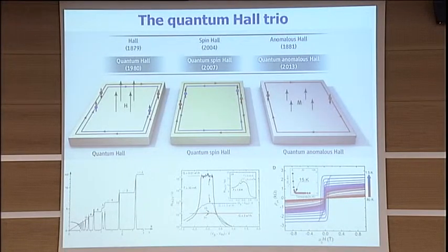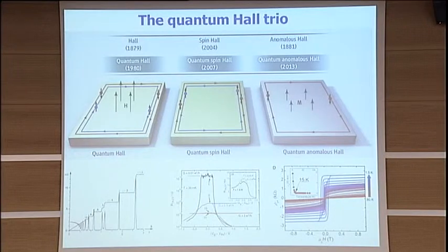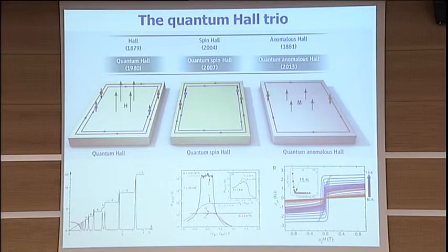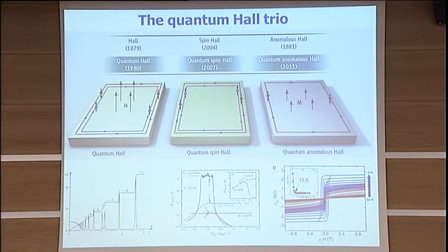After Klaus von Klitzing's great discovery, we now know that the Hall Effect has a quantum version. This is the famous trace of the Quantum Hall Effect as a function of the magnetic field, where the Landau levels play a very important role. In the case of the integer Quantum Hall Effect, these integers also correspond to the filling factor at which the number of Landau levels are filled.